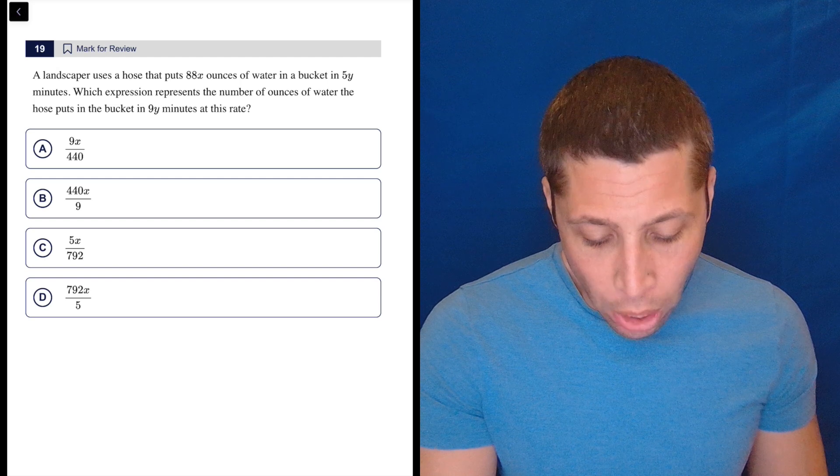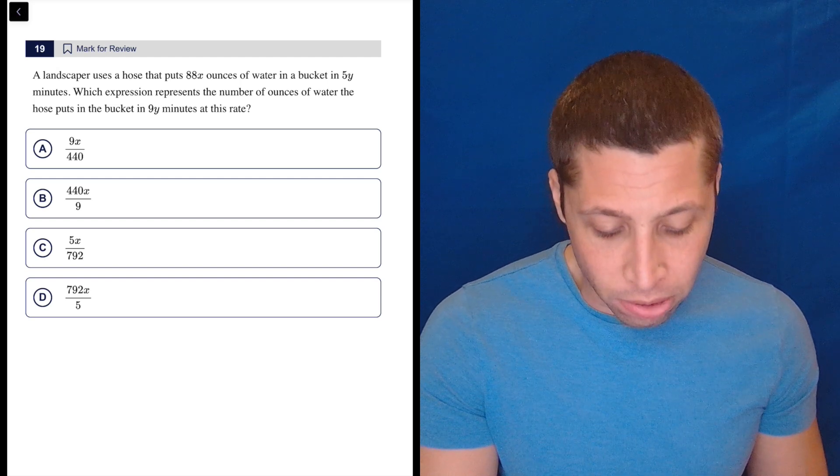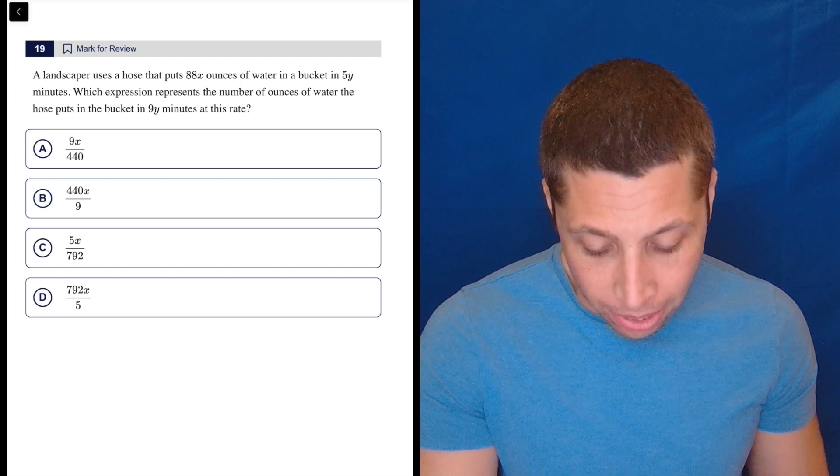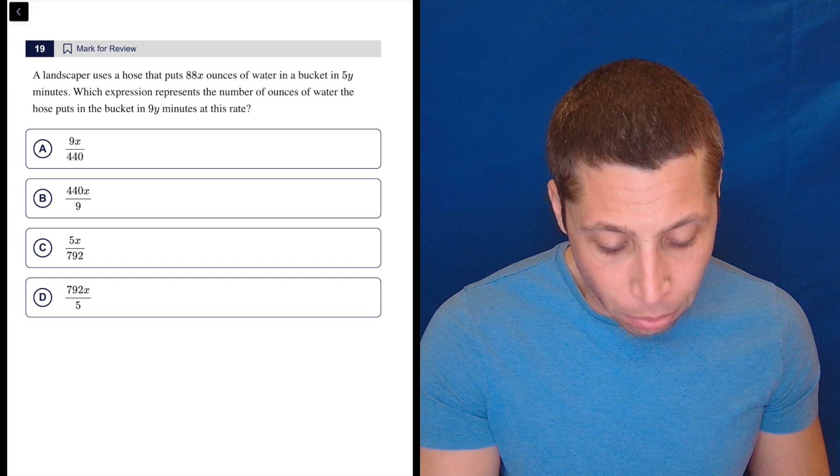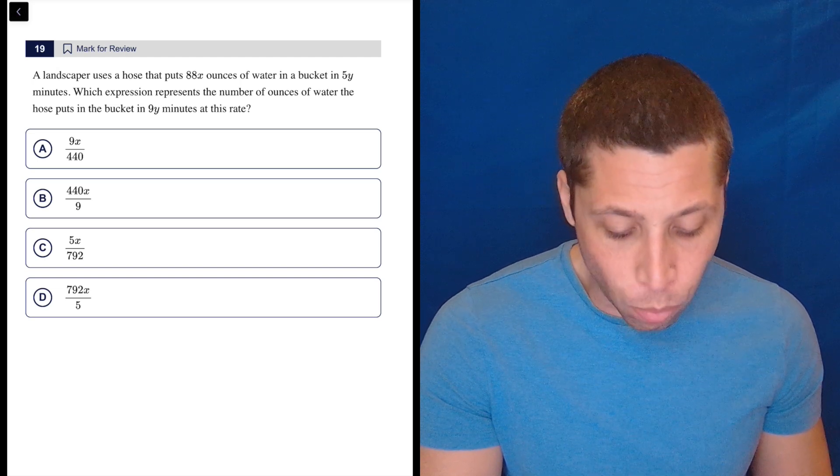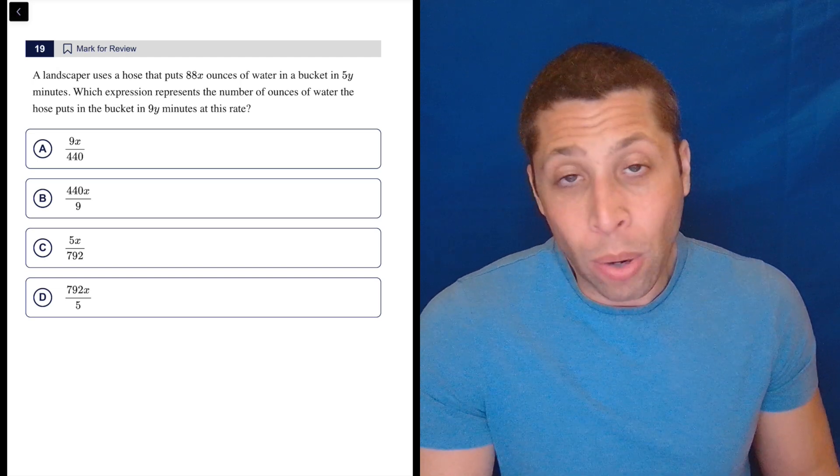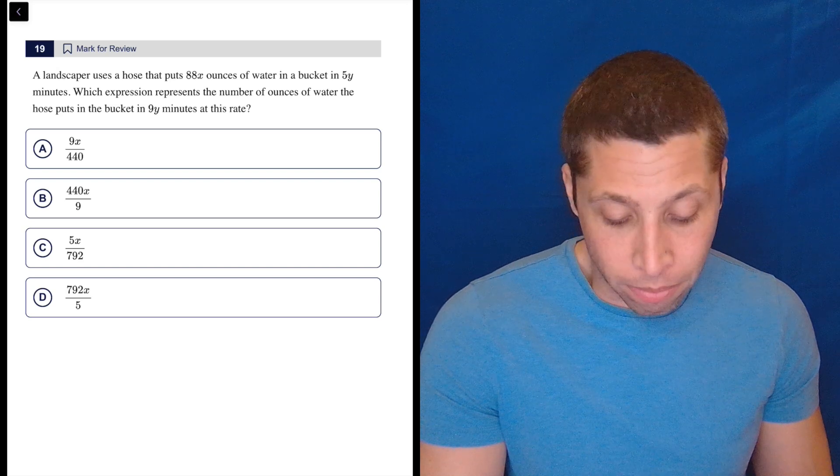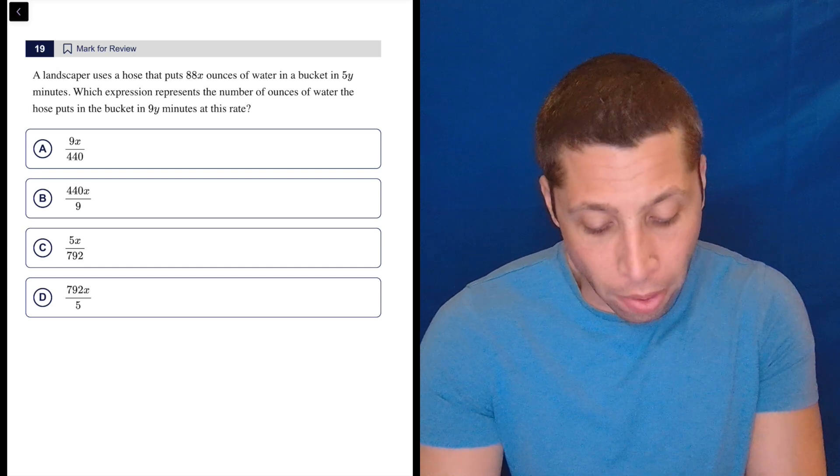A landscaper uses a hose that puts 88X ounces of water in a bucket in 5Y minutes. Which expression represents the number of ounces of water the hose puts in the bucket in 9Y minutes at this rate? Yeah, it's ratios and I could do them by keeping the letters around, but why bother?